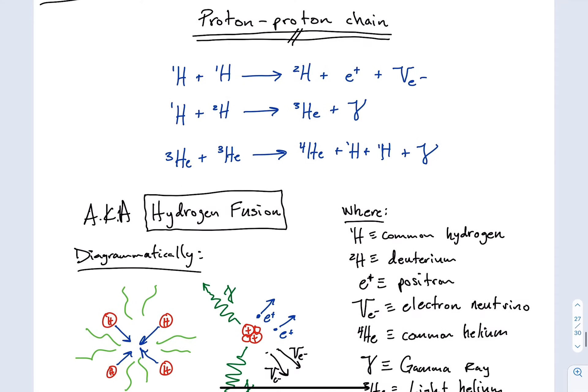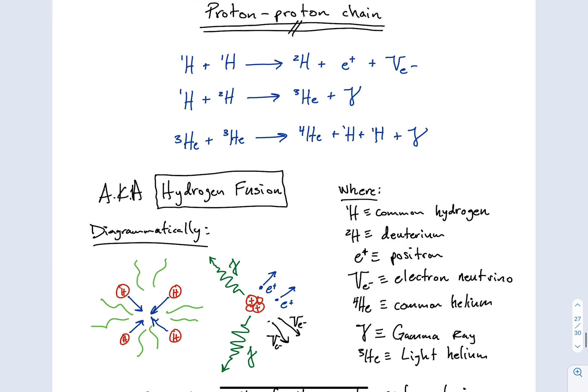The proton-proton chain, I've kind of created two different views of it, sort of a chemistry view where we're looking at the chemical processes that are going on inside the core of our protostar, and then I drew a diagrammatic representation of these equations. Now something to keep in mind is that this proton-proton chain, which is also known as hydrogen fusion, is the energy source of our star, and I've simplified it in this lecture.